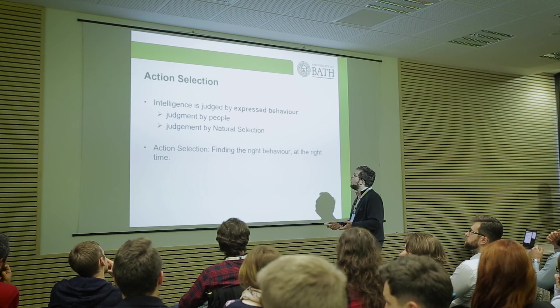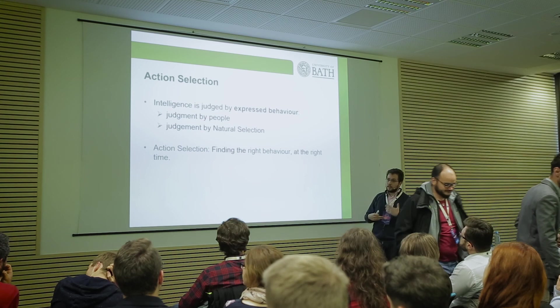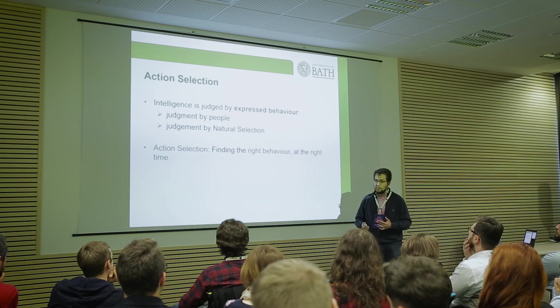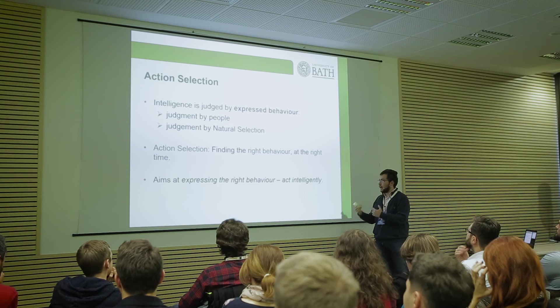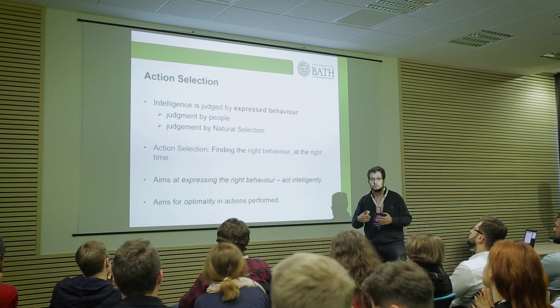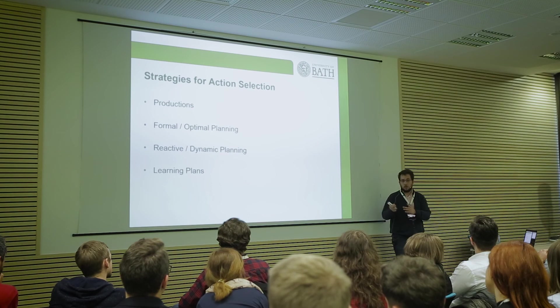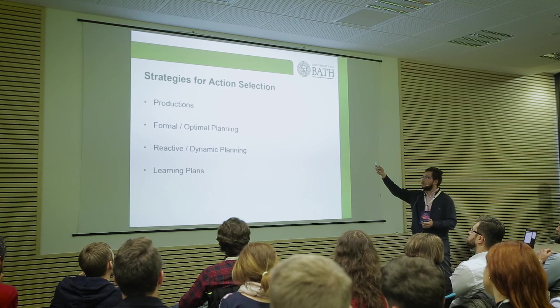Action selection — intelligence is expressed by behavior, judged by people and by natural selection in nature. An action selection mechanism aims at finding the right behavior at the right time, based on a dynamic environment, expressing the right behavior to act intelligently. There was symbolic AI first — all the if-else statements — and then we ended up having production systems, formal and optimal planning, reactive dynamic planning, and learning plans.